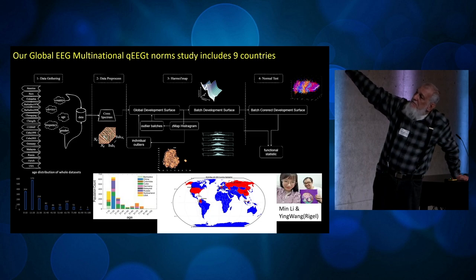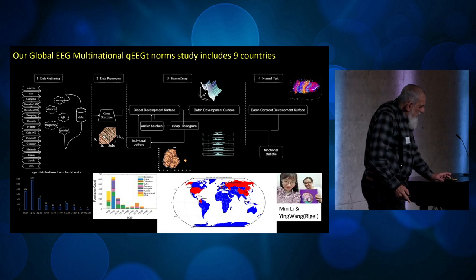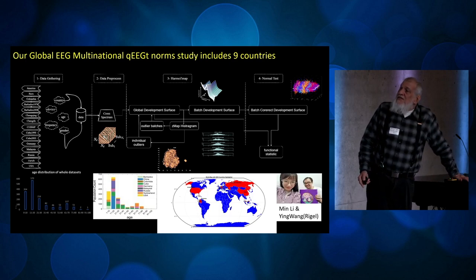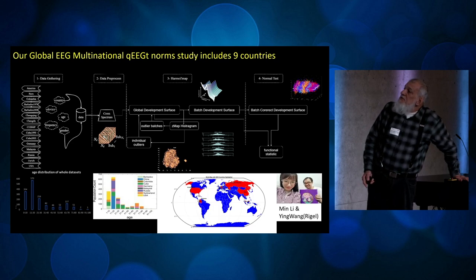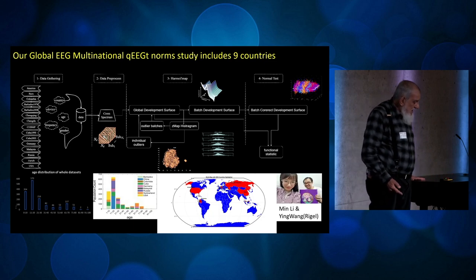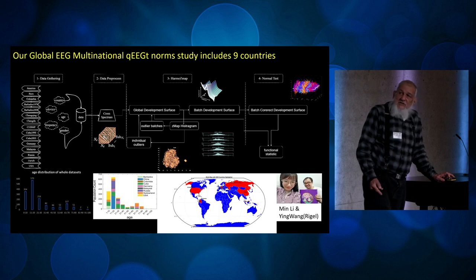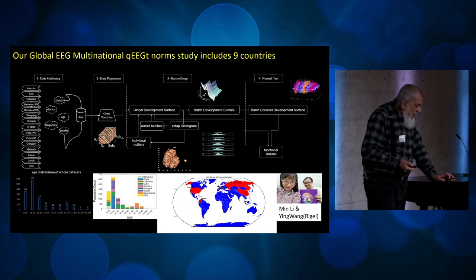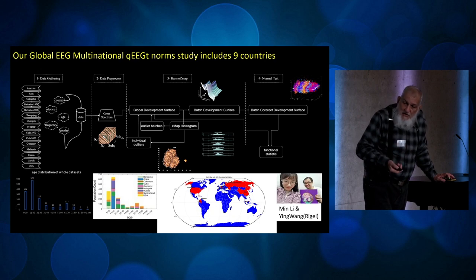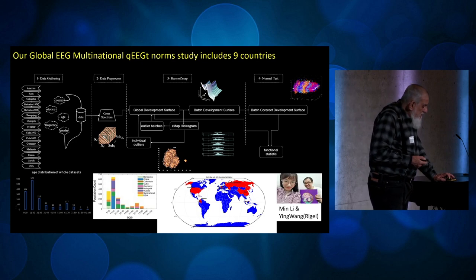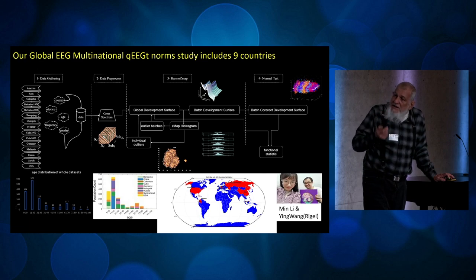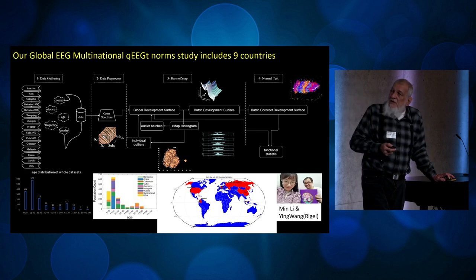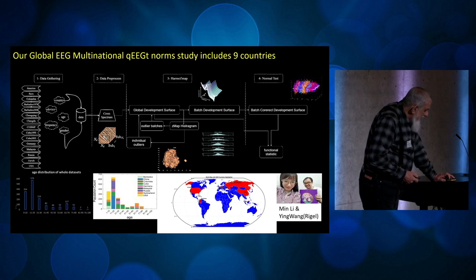What we did was federated learning, in that nobody shared raw data. We were able to correct site problems by using manifold learning and pick out places that had problems — such as misplacement of electrodes — and we obtained norms tested in learning disability, in the detection of subjects with the Presenilin-1 mutation for dementia, and also in COVID-induced brain disorders. These norms are publicly available, both the data for the cross-spectrum and all the software to produce this type of data.